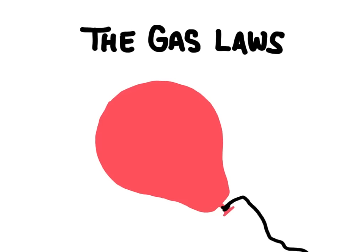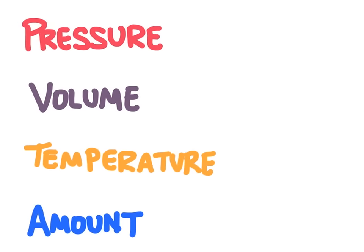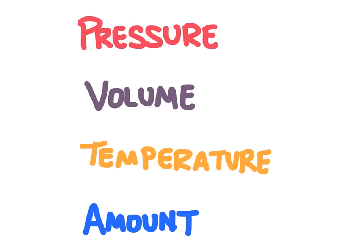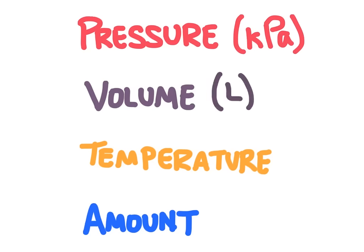In this video, we're going to learn about the gas laws. The gas laws are relationships between different variables we use to describe gases. These are the four variables we're going to look at: pressure, generally measured in kilopascals; volume, generally measured in liters; temperature, generally measured in Kelvin; and the amount of a gas, generally measured in moles.